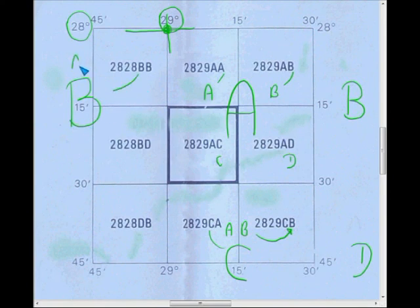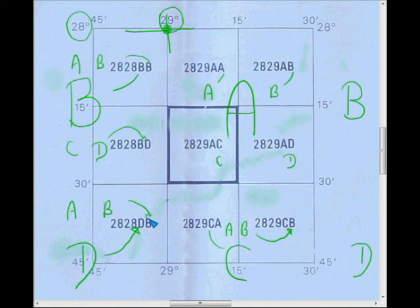This would be CD for the D over there. Likewise here, this is going to be ABC. This is going to be D, which refers to that. And this would be AB referring to that.